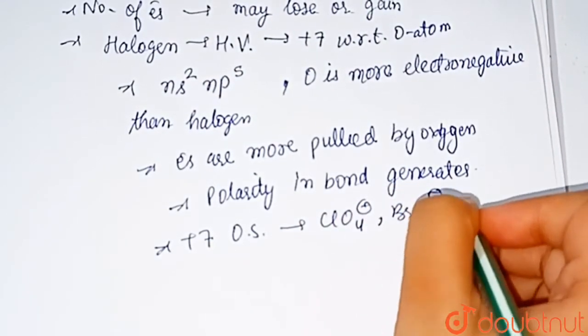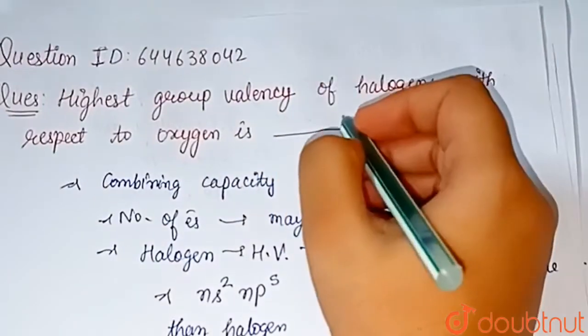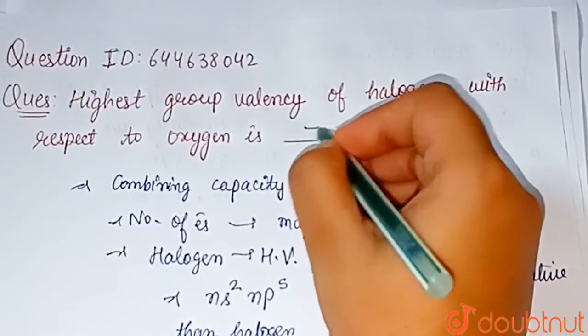Okay, so highest group valency of halogen with respect to oxygen is plus seven.